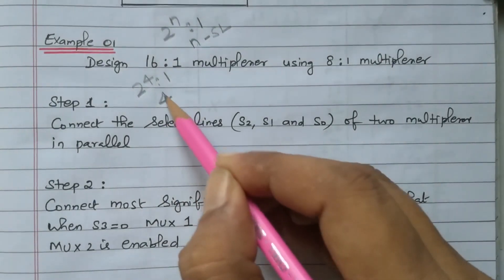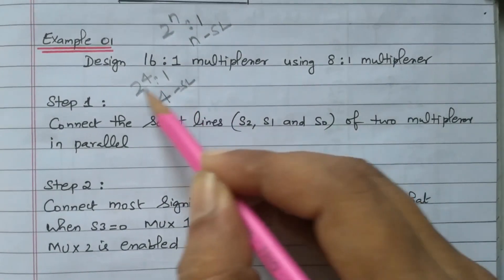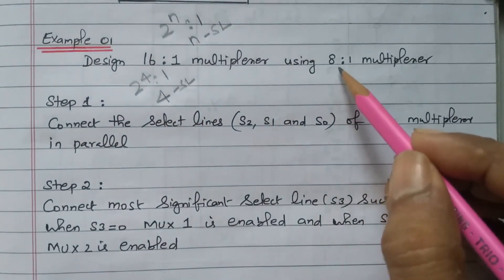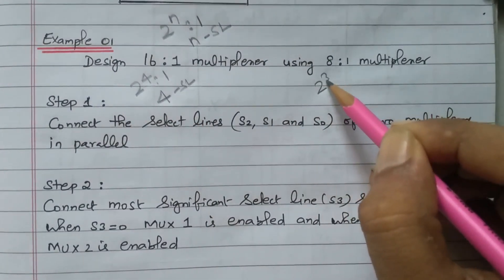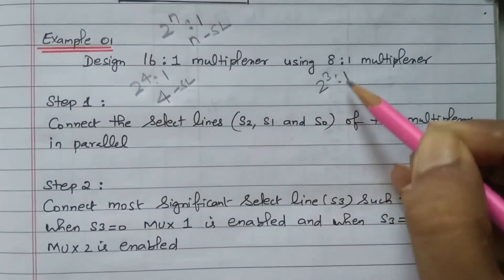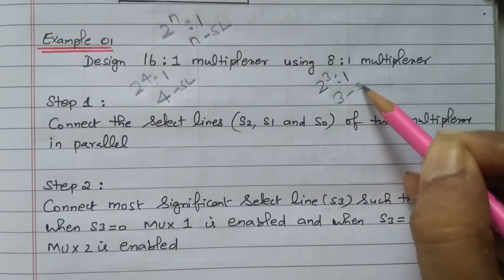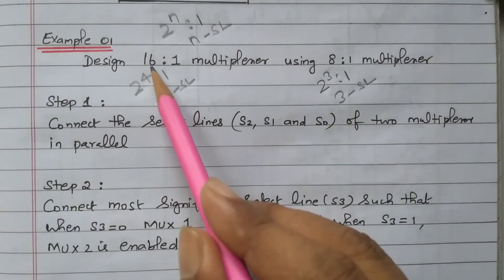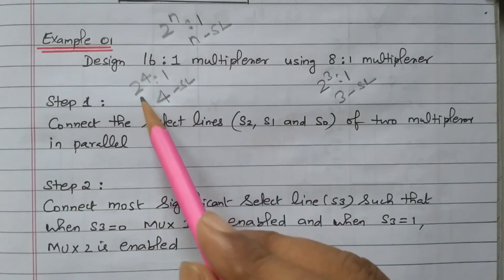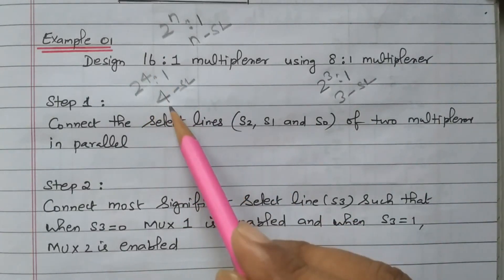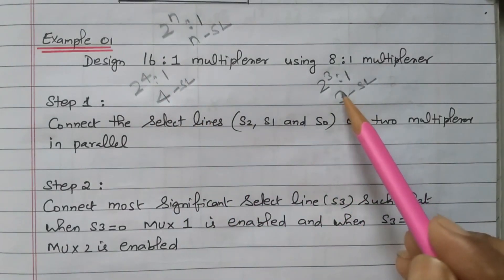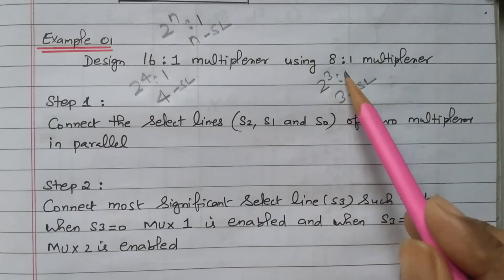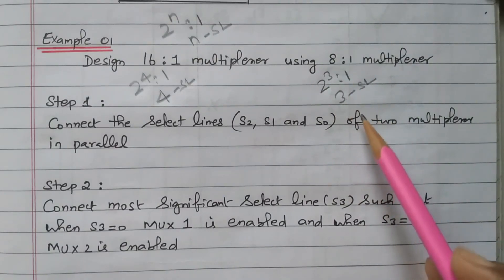The 16-to-1 multiplexer has 4 selection lines since 2 to the power 4. An 8-to-1 multiplexer is 2 to the power 3, so it has 3 selection lines. We need to design the 16-to-1 multiplexer having 4 selection lines using two 8-to-1 multiplexers having 3 selection lines each.